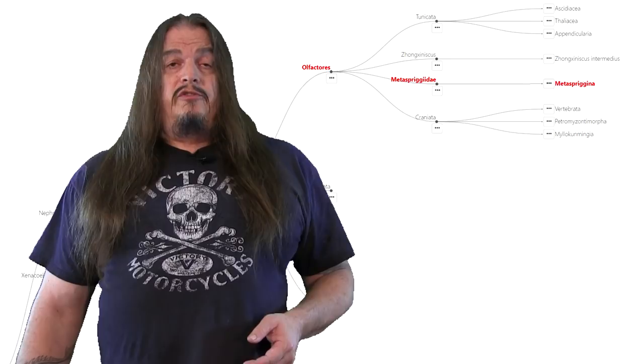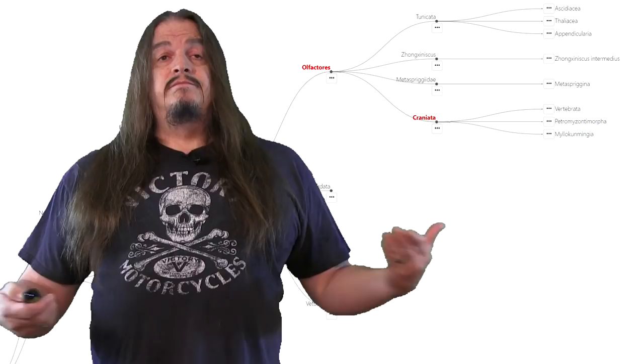That, of course, leads us into the next clade of our evolutionary sequence, craniata. Olfactory chordates with some kind of cranium.